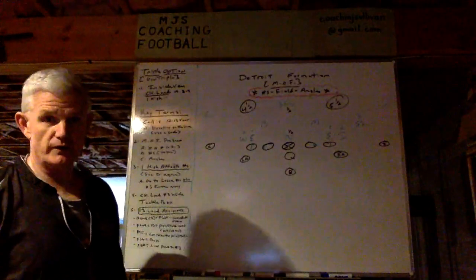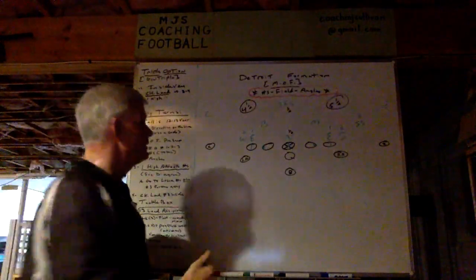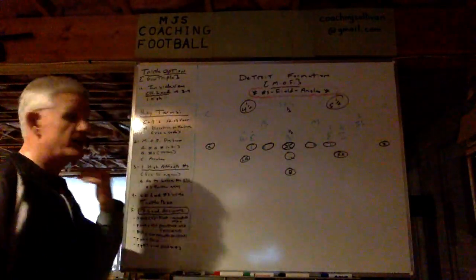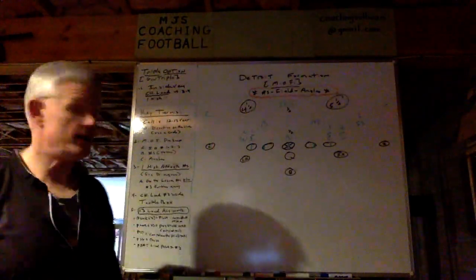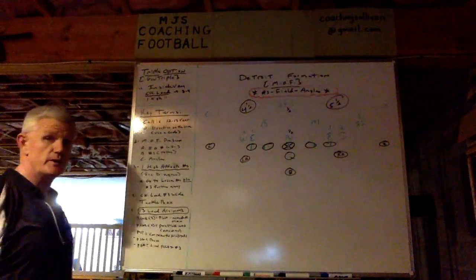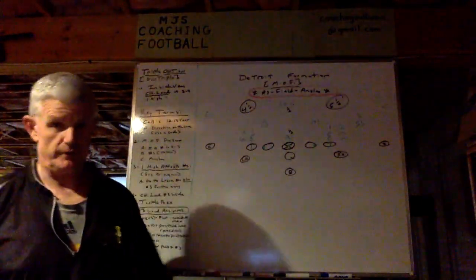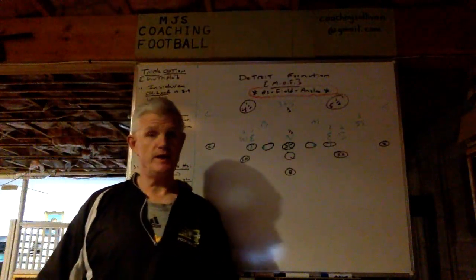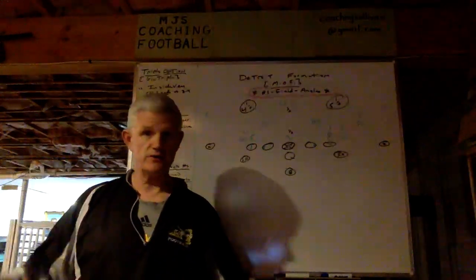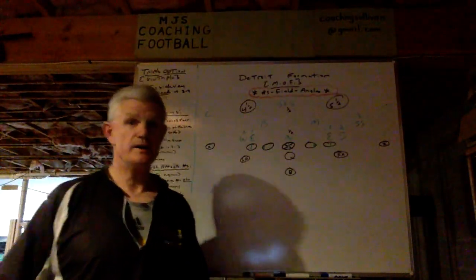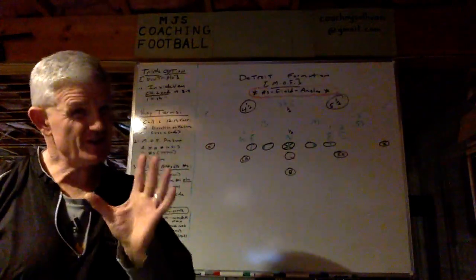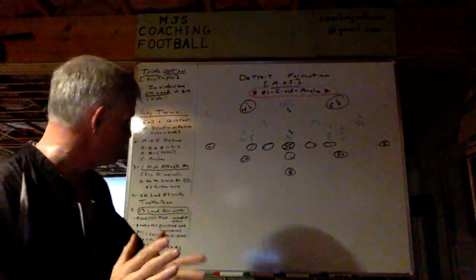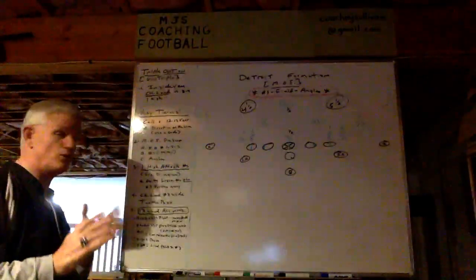You've got to identify 1, 2, and 3, which we have. You've got to identify total numbers, which we have. And then are there any angle advantages? The angles are the same, the fields are the same, but the numbers are going to be different. So let me get into that right now.